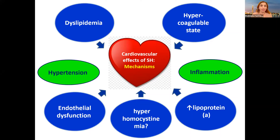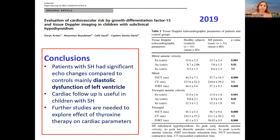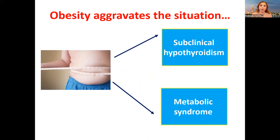We have hypertension as a risk factor, inflammation, dyslipidemia, hypercoagulable state, endothelial dysfunction, hyperhomocysteinemia, and increased lipoprotein(a). A quite recent article published in 2019 evaluating cardiovascular risk factors in children with subclinical hypothyroidism found the main finding was diastolic dysfunction of the left ventricle.